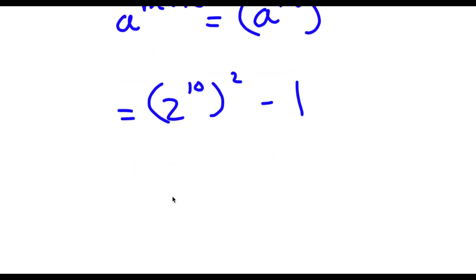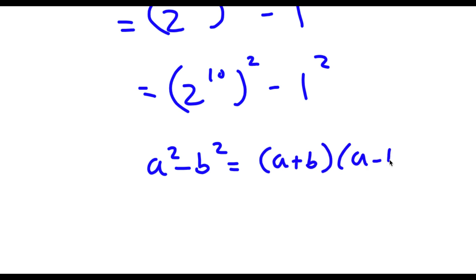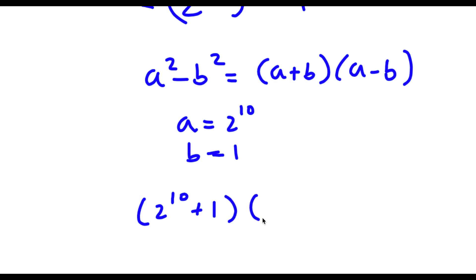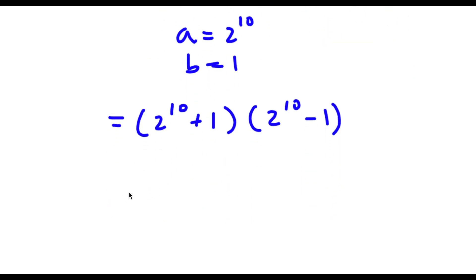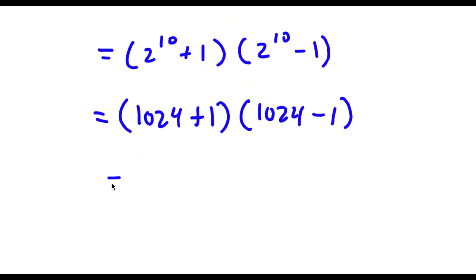Now 1 here is the same thing as 1 squared. And if I have something in the form a squared minus b squared, this is equal to a plus b times a minus b. So in this case, a is equal to 2 to the power of 10 and b is equal to 1. So I have 2 to the power of 10 plus 1, times 2 to the power of 10 minus 1. Now 2 to the power of 10 is equal to 1024. So now I have 1024 plus 1 times 1024 minus 1. That gives 1025 times 1023.